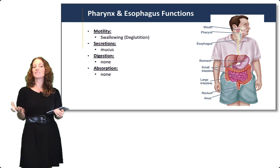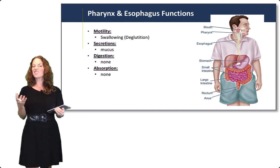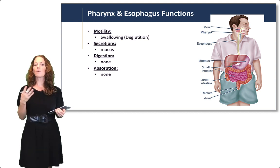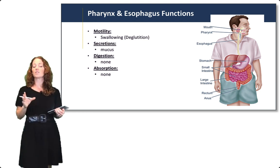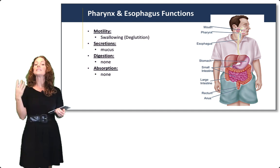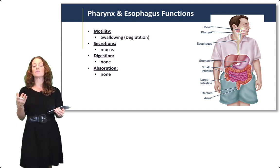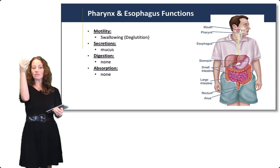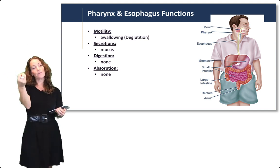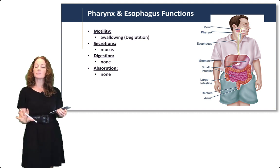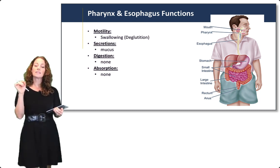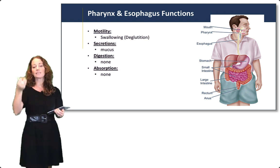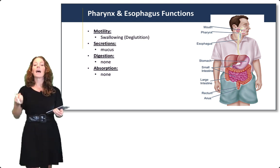Now to the pharynx and esophagus. These are very important tubes for passageway from the oral cavity down to the lower GI tract. They are very important for motility — that is, swallowing or deglutition — moving the bolus of food from the mouth down through the pharynx, through the esophagus, and ultimately to the stomach. The main secretions in the pharynx and esophagus are mucus, to lubricate the bolus as it moves down. There is no digestion or absorption through the pharynx and esophagus.